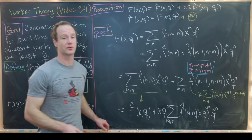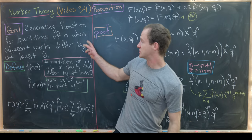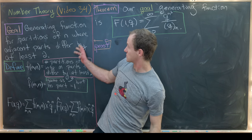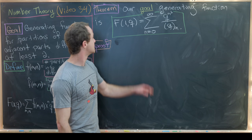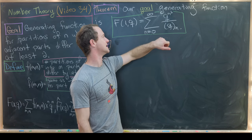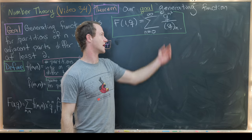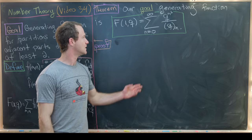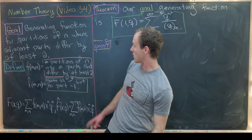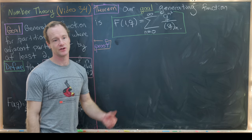We're now ready to prove our main goal: finding the generating function for partitions where adjacent parts differ by at least 2. Combining the two propositions gives the functional equation F(x,q) = F(xq, q) + xq · F(xq², q). We set x = 1 at the end to get F(1,q), which counts all such partitions without restricting the number of parts. Recall that a₀ = 1, corresponding to the empty partition.